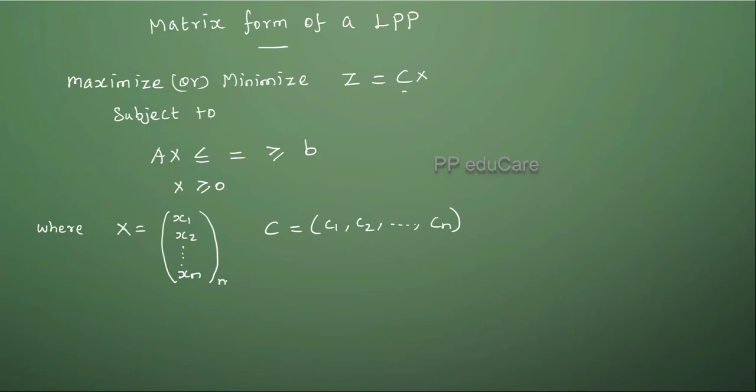This is an n by 1 matrix and C is the 1 by n matrix because here we are having n number of decision making variables. Therefore, we have n number of corresponding cost coefficients and B equal to B1, B2, etc., Bm.